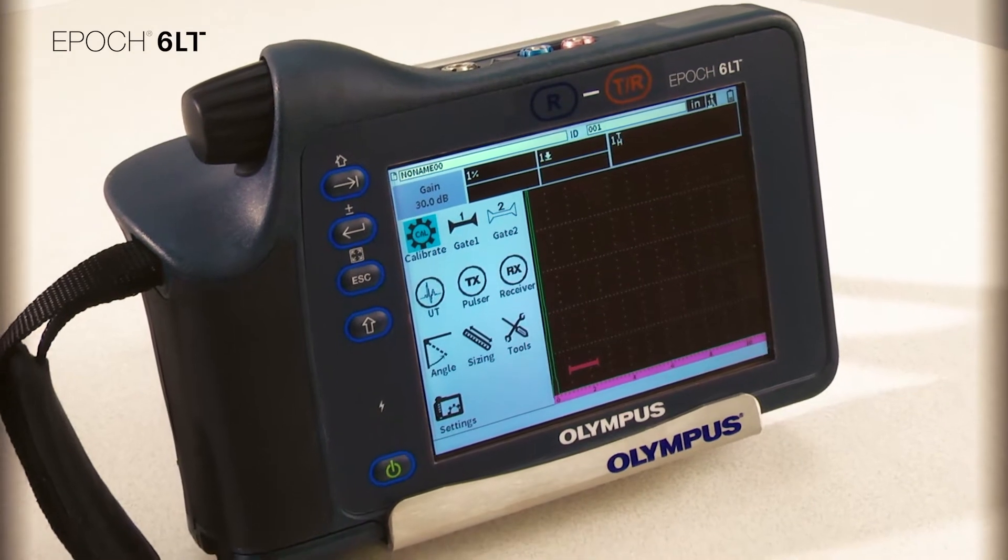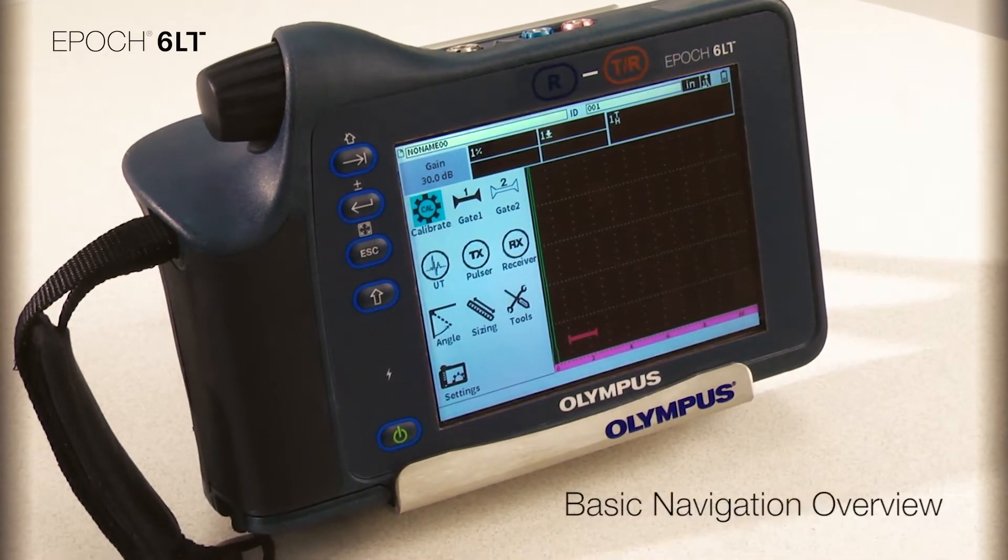This video will guide you through the basic operation of the EPIC 6LT portable flaw detector. The EPIC 6LT flaw detector is controlled through an easy-to-use interface consisting of four navigation keys: tab, enter, escape, and shift, as well as a rotary knob and power button.